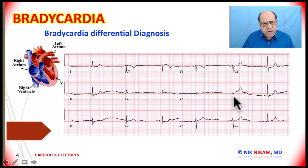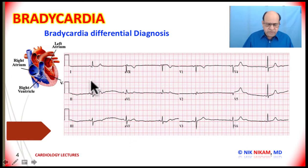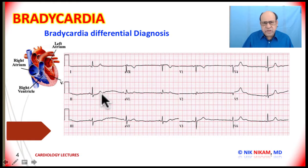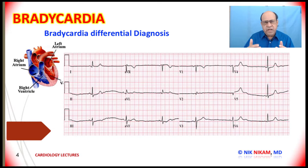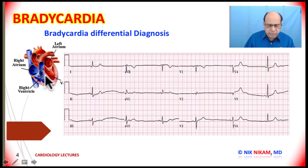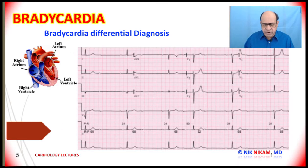You may be dealing with second degree AV block or third degree AV block where the PR intervals vary from beat to beat. Next, we look at the QRS complex to see if it is narrow or wide. If it is narrow, the QRS is supraventricular. If it is wide, it could be supraventricular or ventricular — for example, with right bundle branch block or left bundle branch block. Also consider whether there is a 1-to-1 relationship, a 2-to-1 relationship, or evidence of AV dissociation where the atria and ventricles are beating independently.